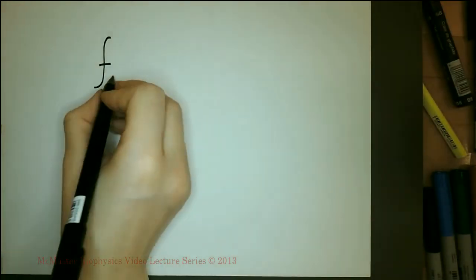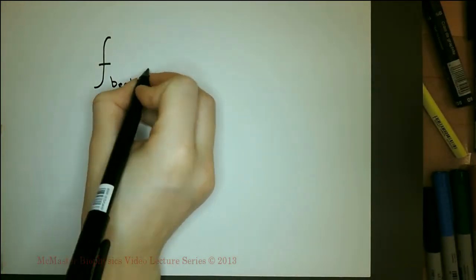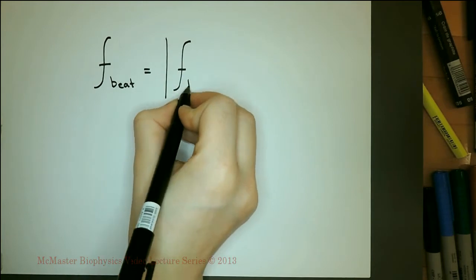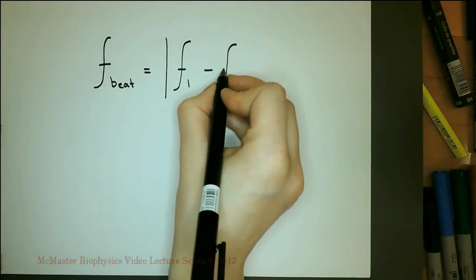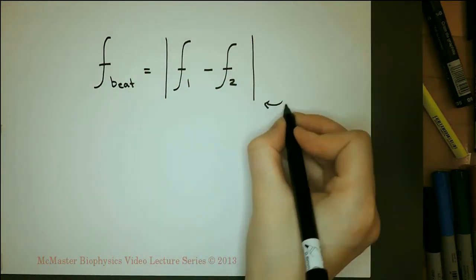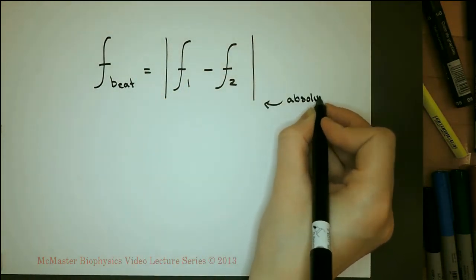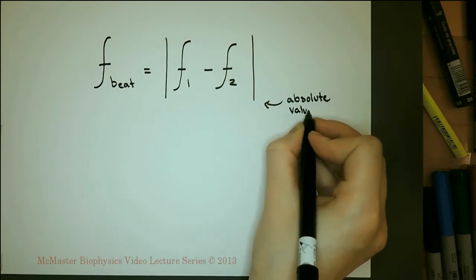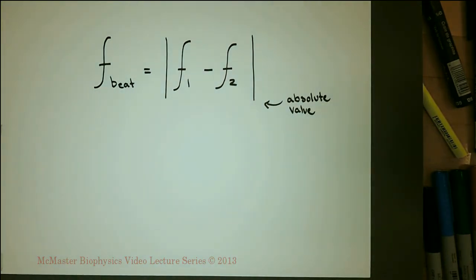Beat frequencies occur when two sound waves with very close frequencies are played together. The frequency of the beats is the difference between the two close frequencies. When the beats are further apart, the frequencies are closer together. When the beats disappear, the frequencies are perfectly in tune.